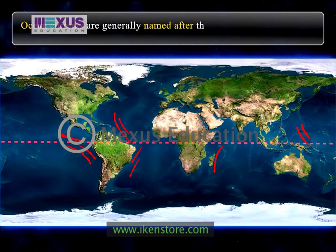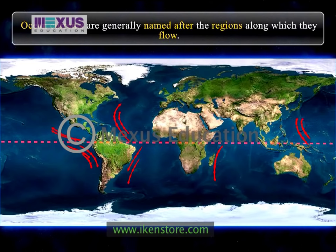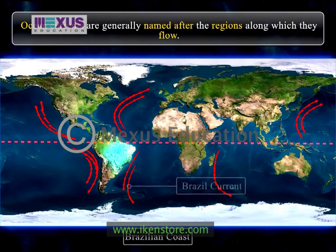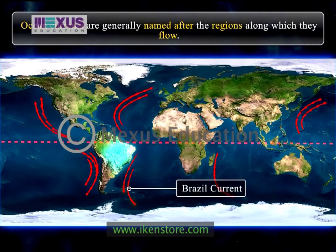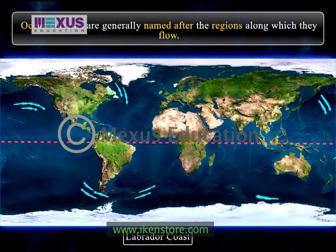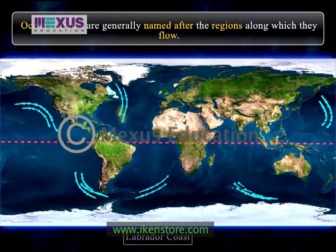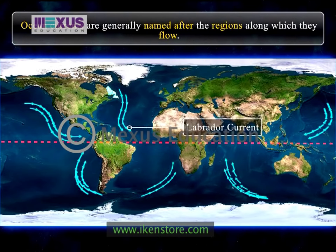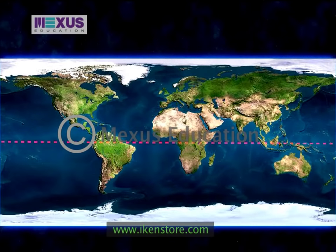Ocean currents are generally named after the regions along which they flow. The warm ocean current flowing along the Brazilian coast is called the Brazilian Current, and the cold current flowing along the Labrador coast is known as the Labrador Current.